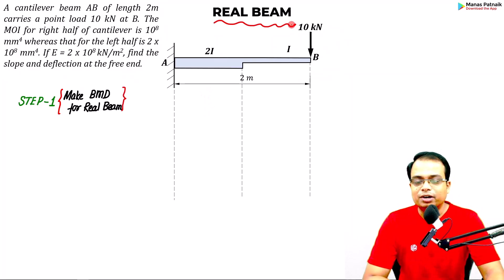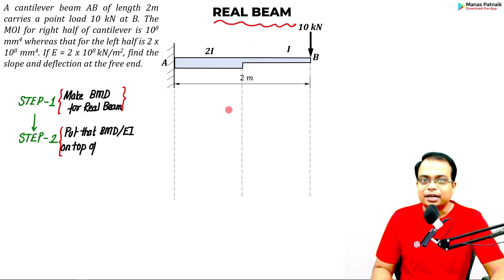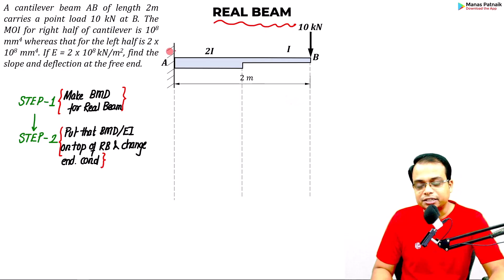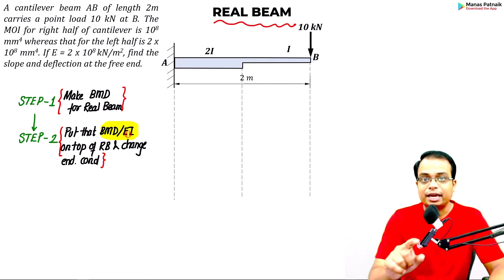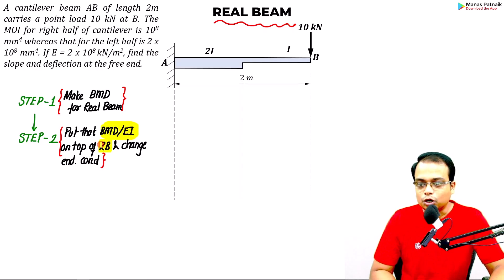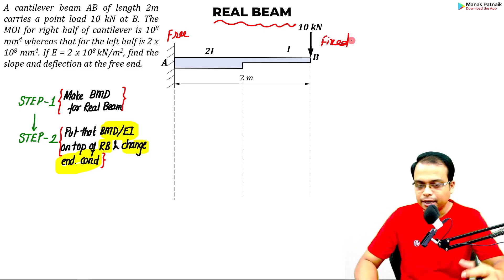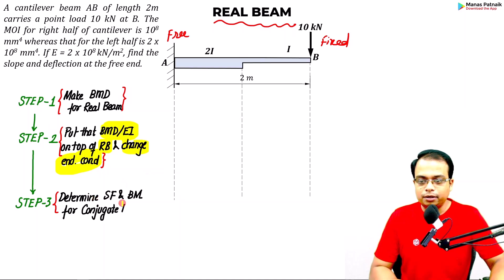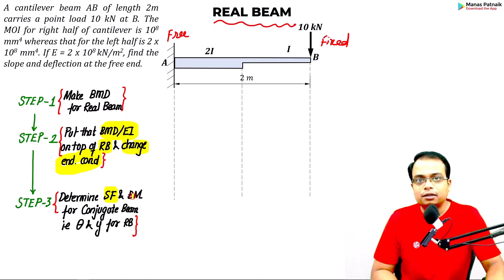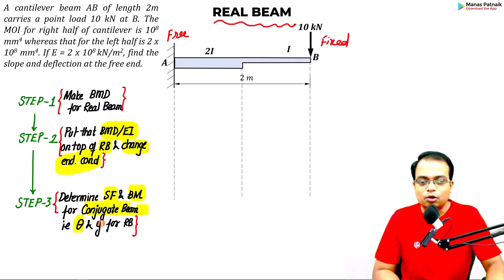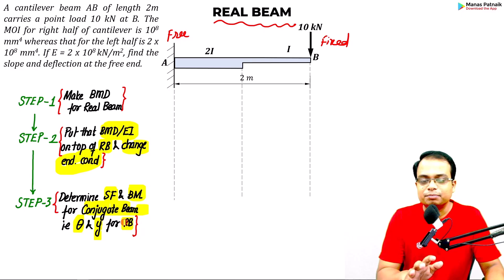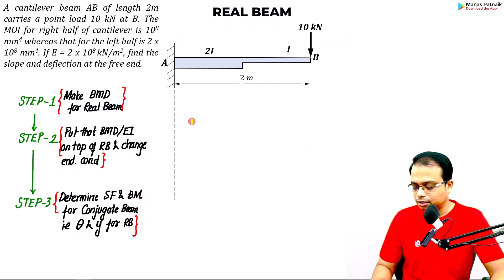Once the bending moment diagram is done, put the M/EI diagram onto the real beam and change the end conditions simultaneously. To transform the real beam into a conjugate beam, this fixed end will be made free, whereas this free end will be made fixed. In step 3, calculate the shear force of the conjugate beam — it gives the slope for the real beam — and the bending moment gives the deflection.